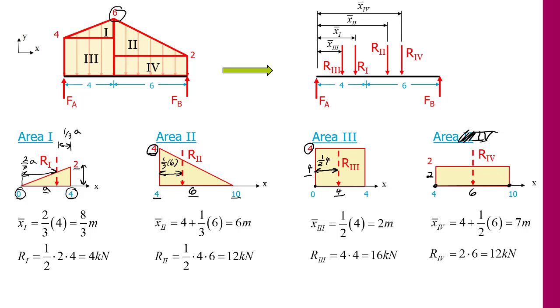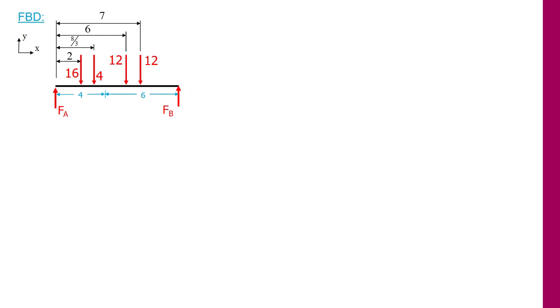So now we have the magnitudes and positions for all of this here, and we can translate that onto our free body diagram and perform our equilibrium. So the first part of our equilibrium, we will do sum of the forces in the y, taking upwards as our positive reference. Now if we see that FA and FB are acting upwards while all of the resultant forces are acting downwards, so we'll get FA plus FB minus 16 minus 4 minus 12 minus 12 is equal to 0. And if we rearrange that, we will get that FA is equal to 44 minus FB. And just as a reminder, that value is in kilonewtons. All of our forces we have been calculating are in kilonewtons.